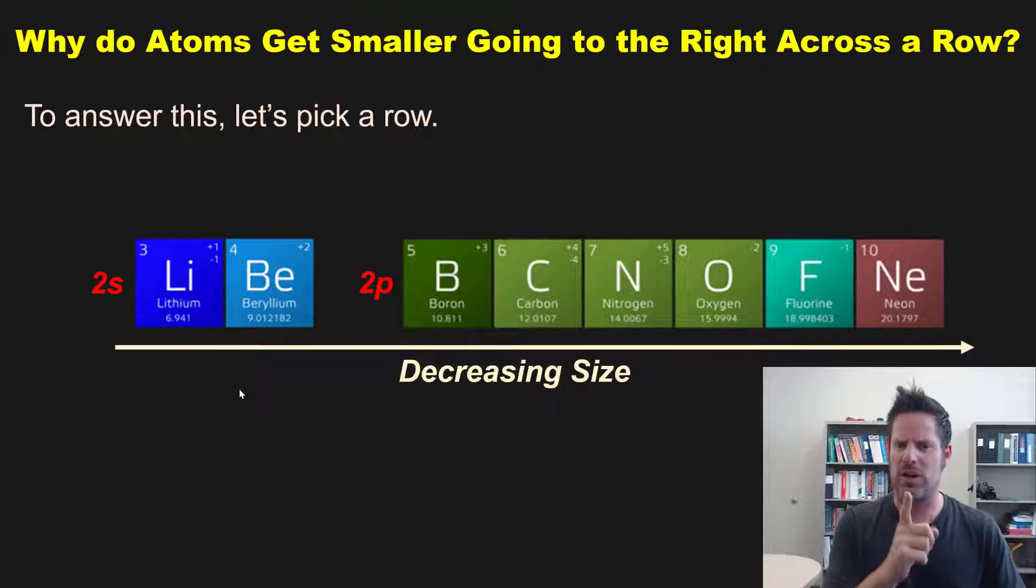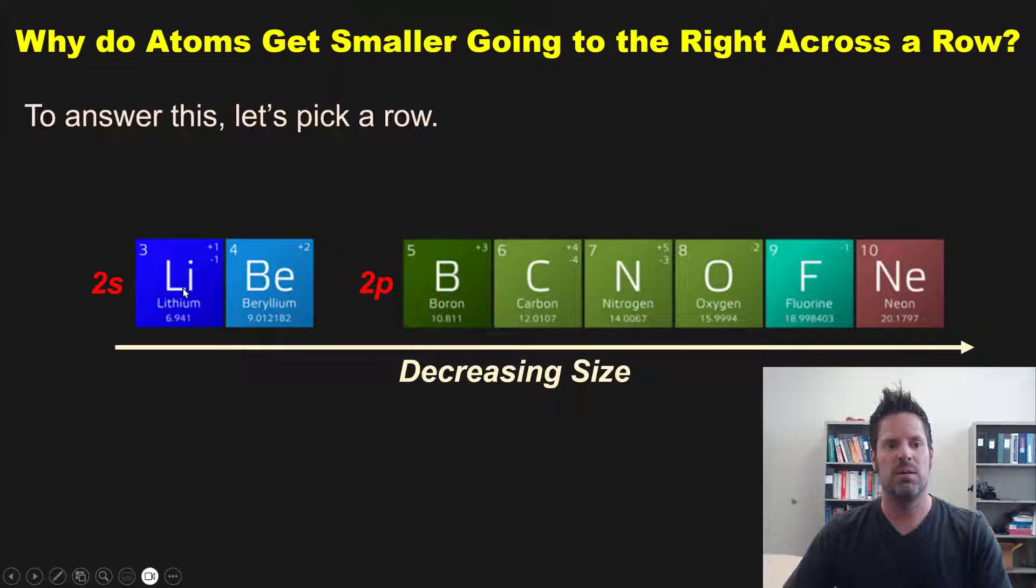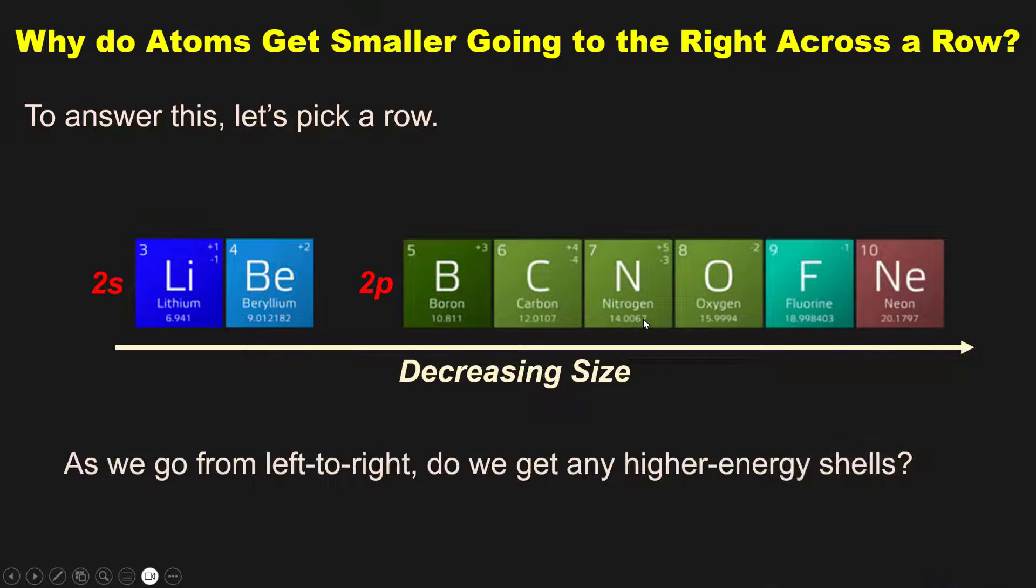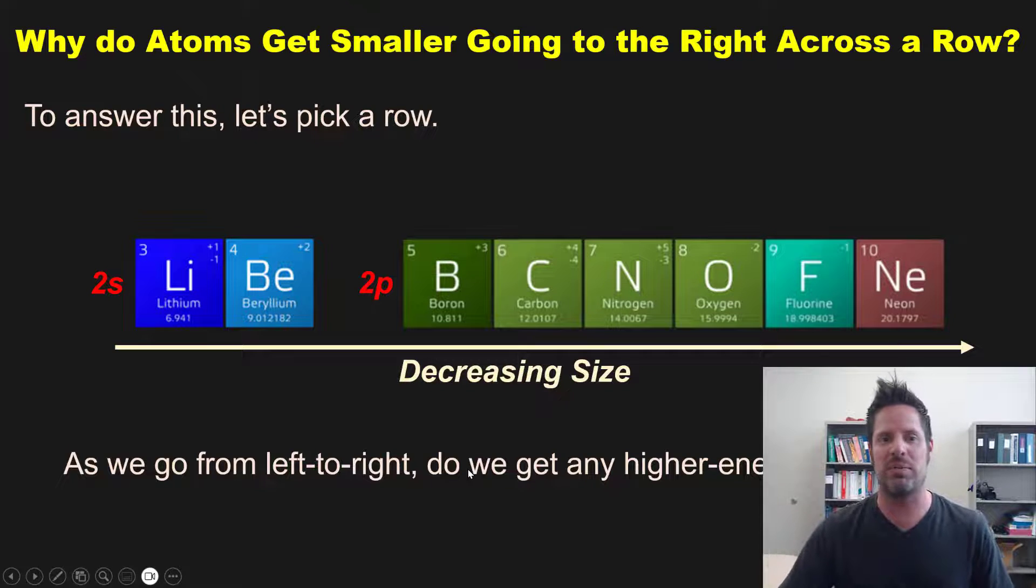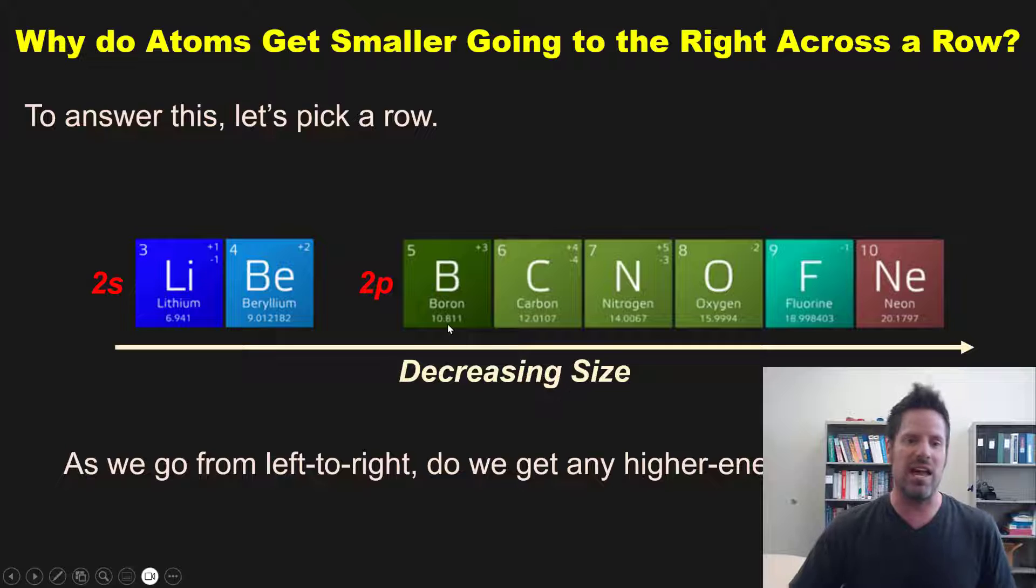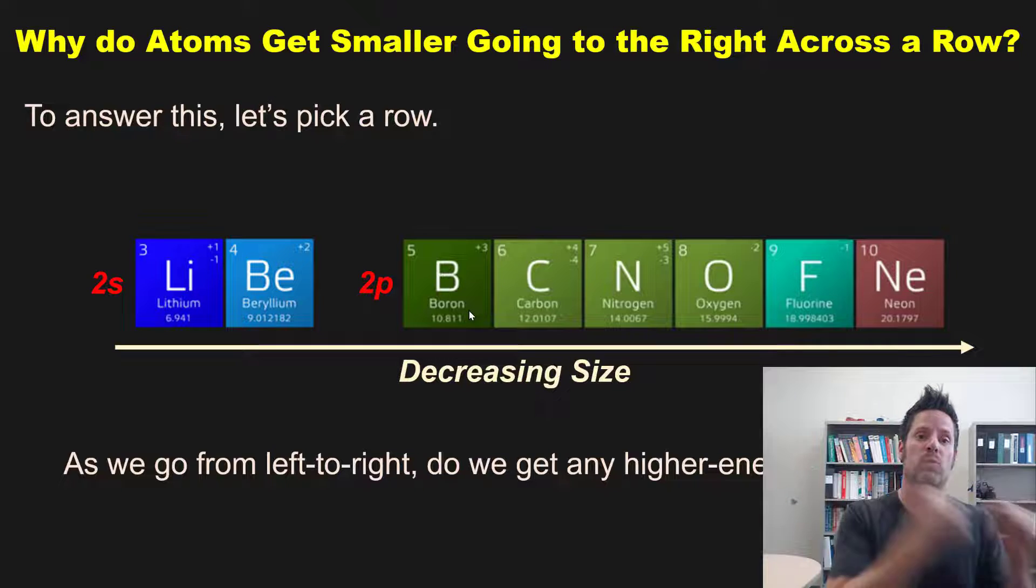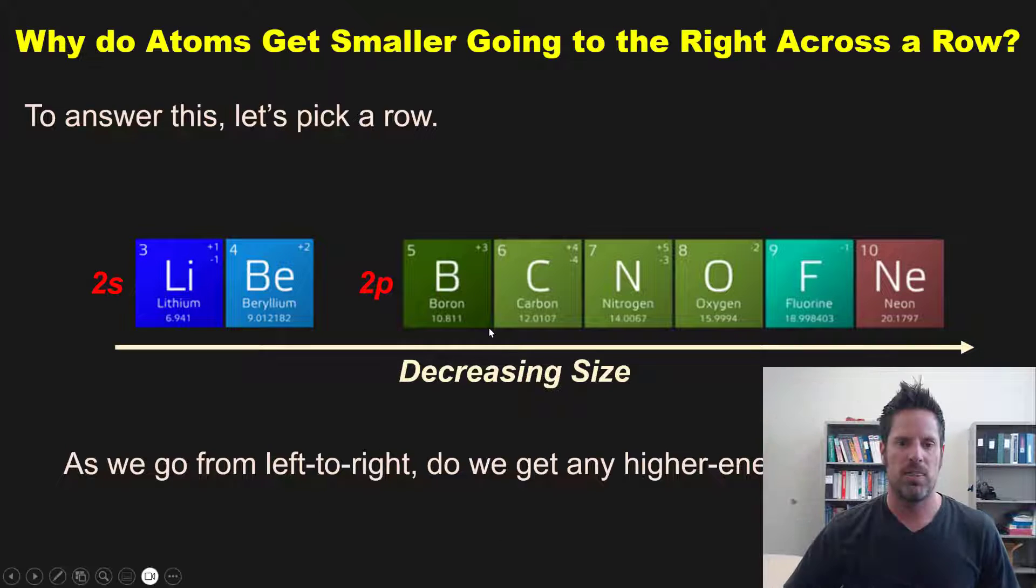Based on what I taught you a moment ago about going down a column, you might wonder is it because I'm getting a larger principal quantum number as I go from 2s to 2p? The answer is no. As we go left to right on a row, do we get any higher energy shells or higher principal quantum number? The answer is no. The energy level of a 2s orbital is n equals 2, and of 2p orbitals is n equals 2.